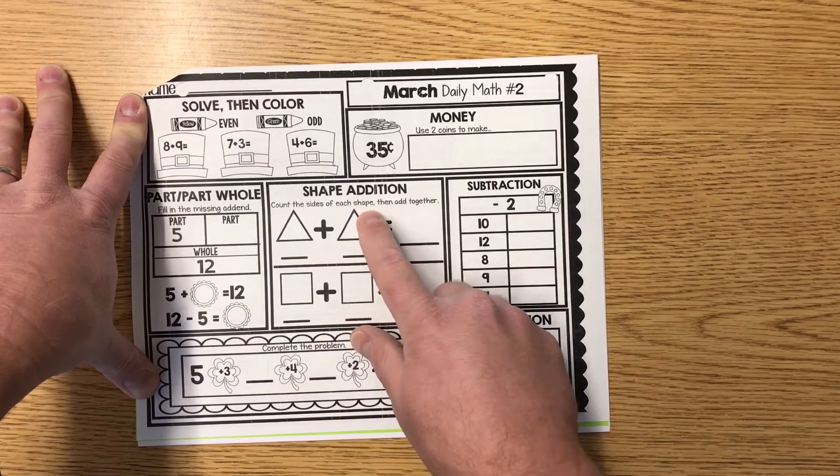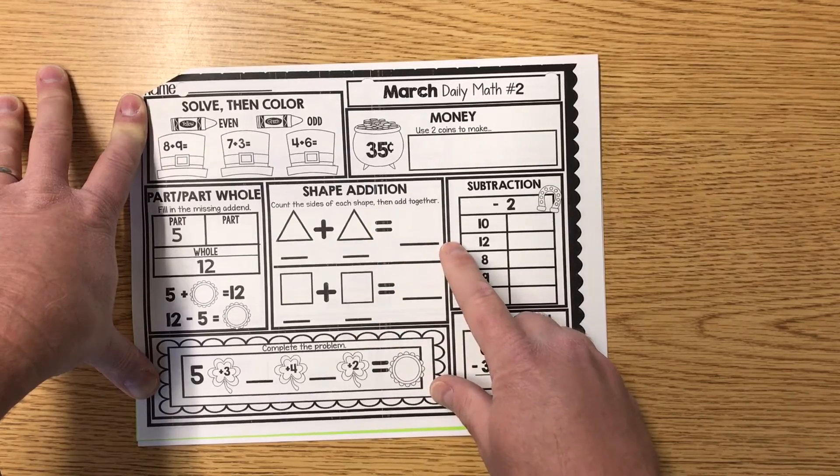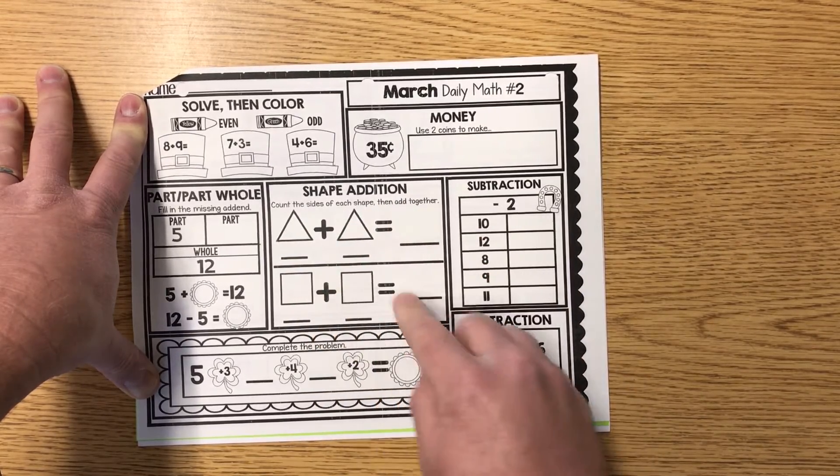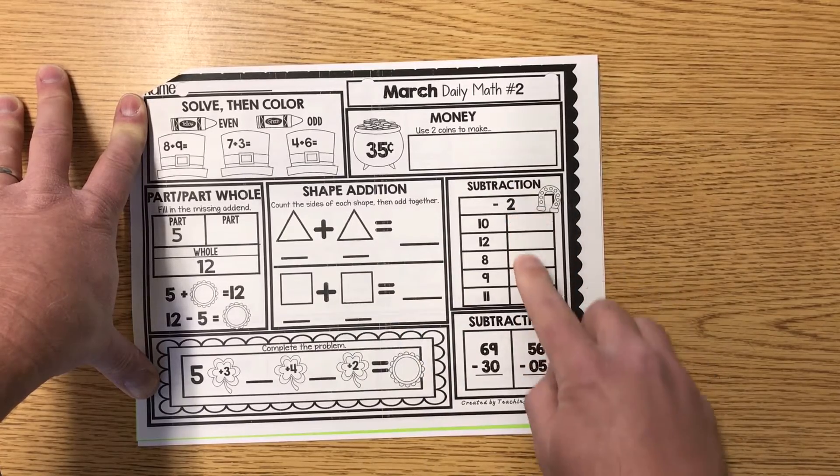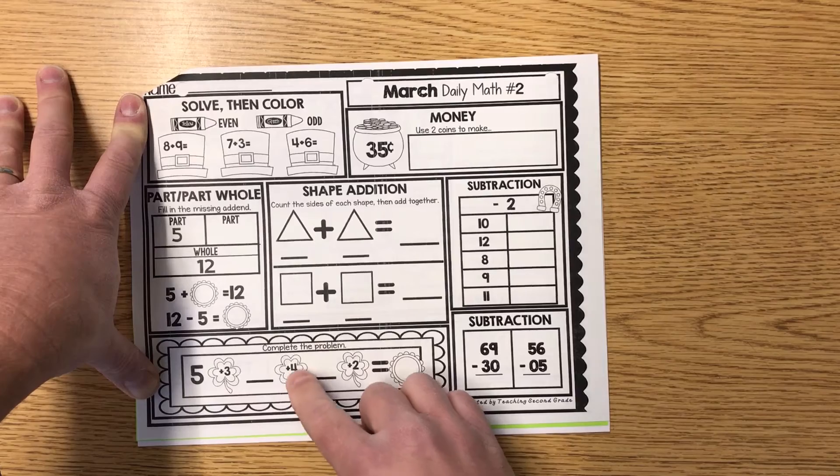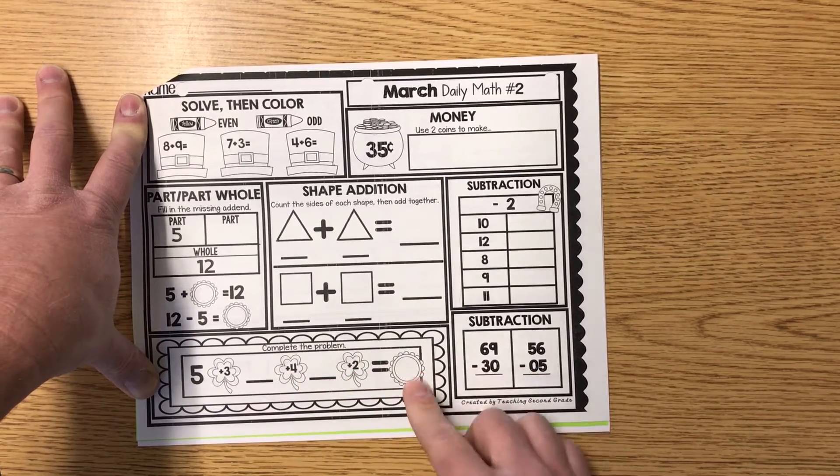Shape addition. Count the sides of each shape, then add together. Count how many sides and write the total for all these. Subtract by two. Complete the problem. Five plus three, then add four, then add two. What's your total? And subtract those two digit numbers.